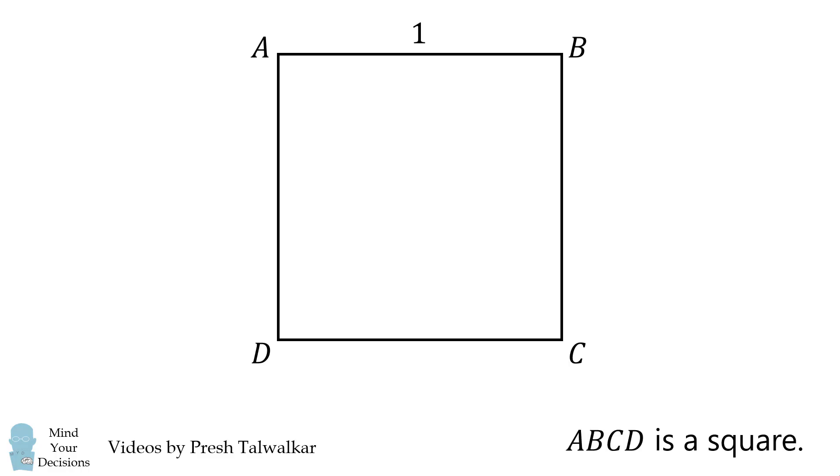ABCD is a square with a side length equal to 1. Pick point E on side DC and pick point F on side BC such that angle EAF is 45 degrees and angle AFB is 70 degrees.